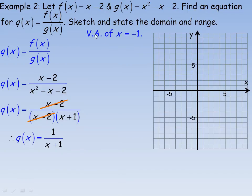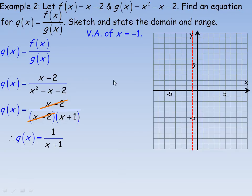There is a vertical asymptote at x equals negative 1. That line means the function is undefined at x equals negative 1 — substituting negative 1 makes the denominator negative 1 plus 1 equal 0, and we cannot divide by 0. Near a vertical asymptote, function values become very large, either large negative or large positive.